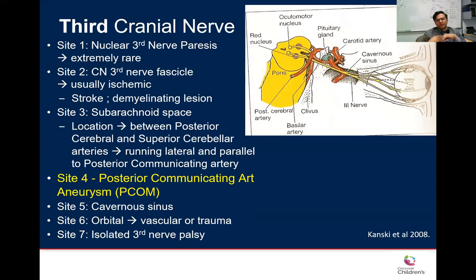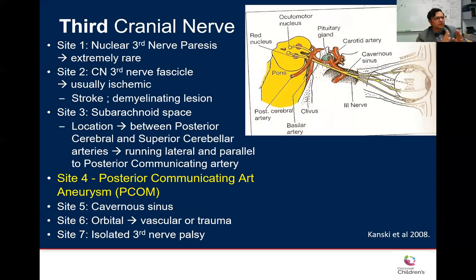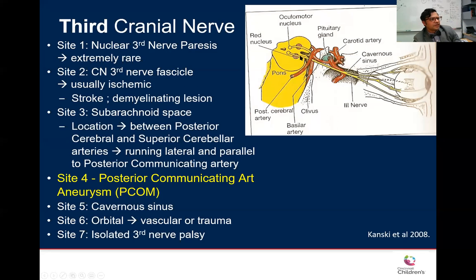The third nerve starts at the level of the midbrain. The fascicle goes by the red nucleus, then exits ventrally forward into the subarachnoid space. A nuclear third nerve palsy is rare but worth mentioning. As you think about the pathway, you can consider whether the third nerve palsy is partial or complete, and where the lesion may be.